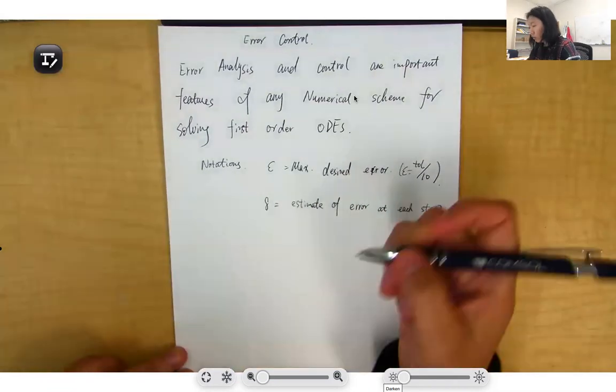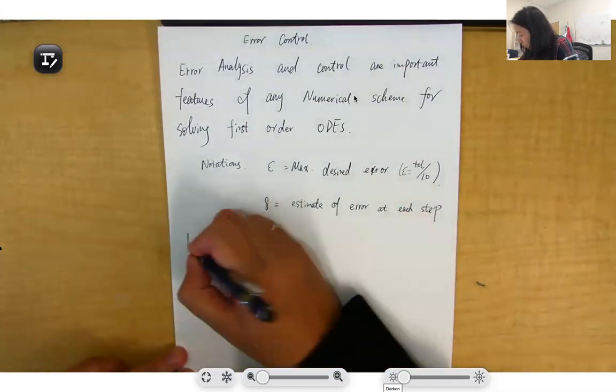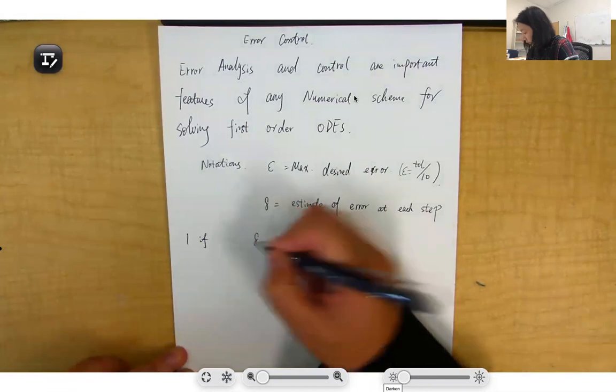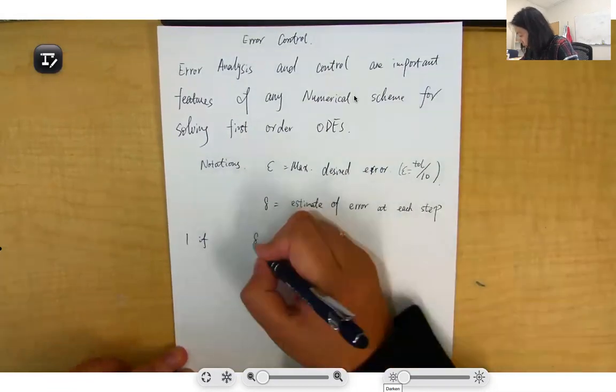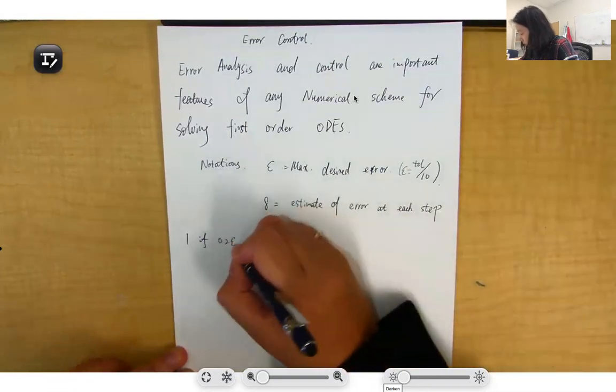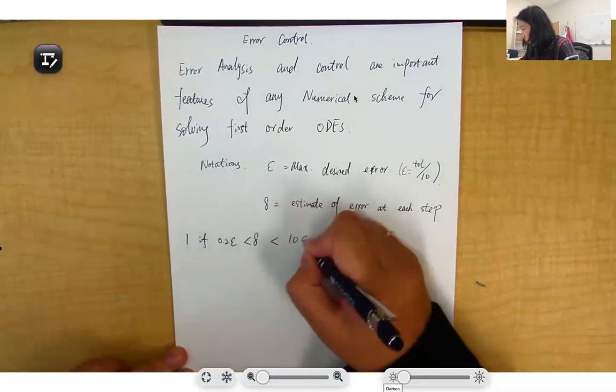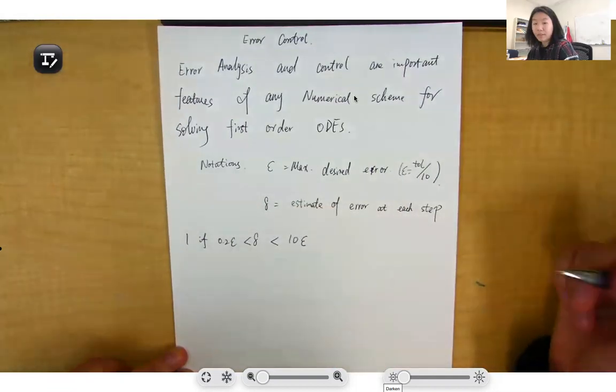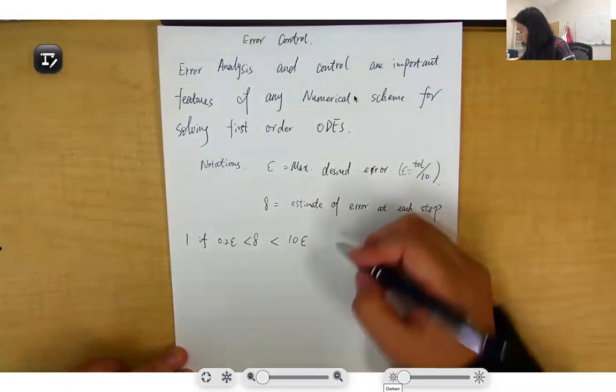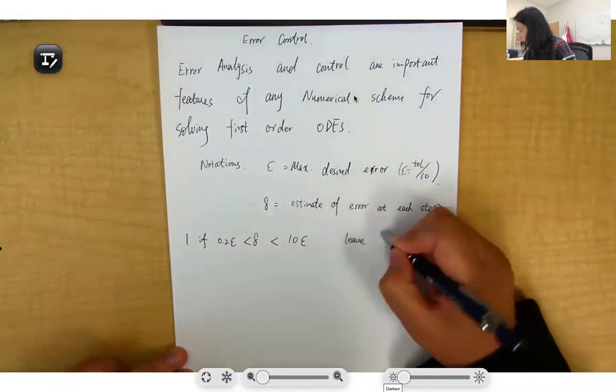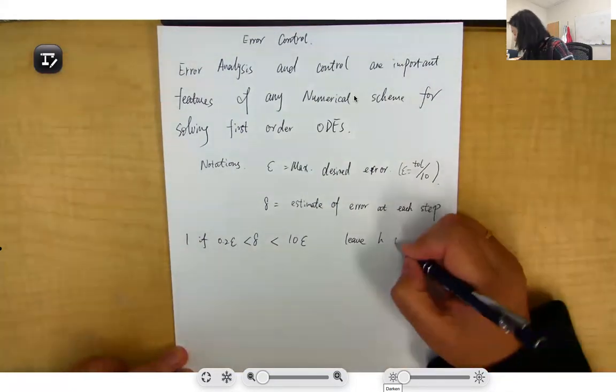How we do error control: if sigma is between 0.2ε and 10ε, we think this is fine for the step size, so we normalize step size and continue.